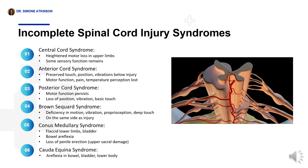Brown-Séquard syndrome results in a loss of motor function, vibration, proprioception, and deep touch sensations on the same side as the spinal cord damage. Conus medullary syndrome involves flaccid lower extremities and bladder and bowel areflexia. While micturition may remain intact, there is a loss of ability for penile erection if the damage is in the upper sacral segments. Cauda equina syndrome involves areflexia of the bowel, bladder, and lower body reflexes.